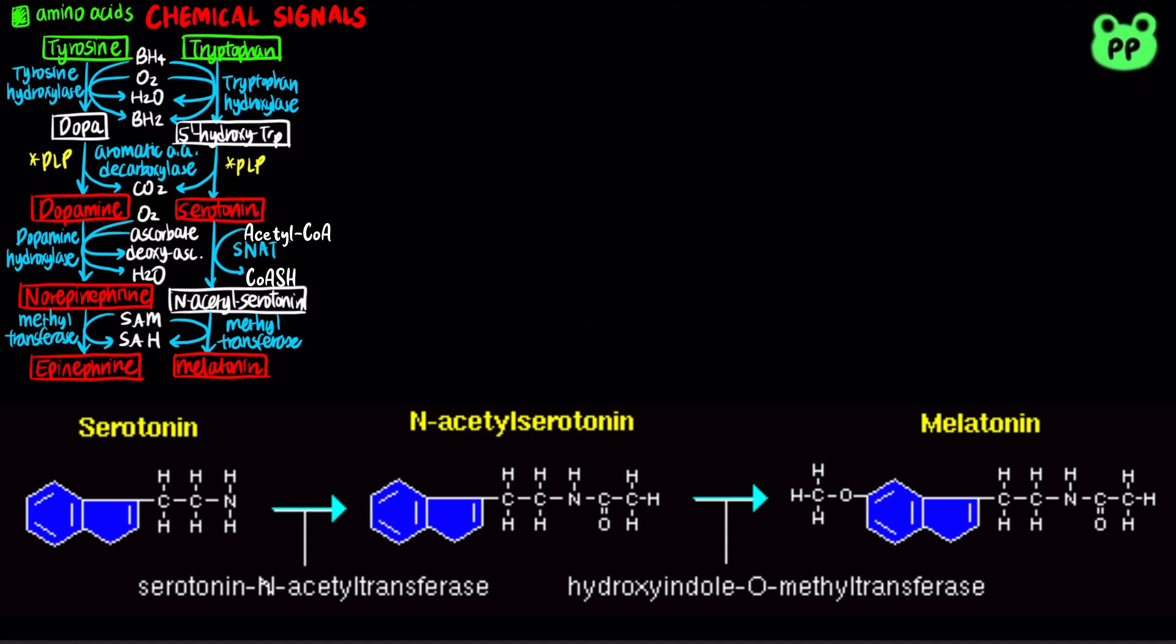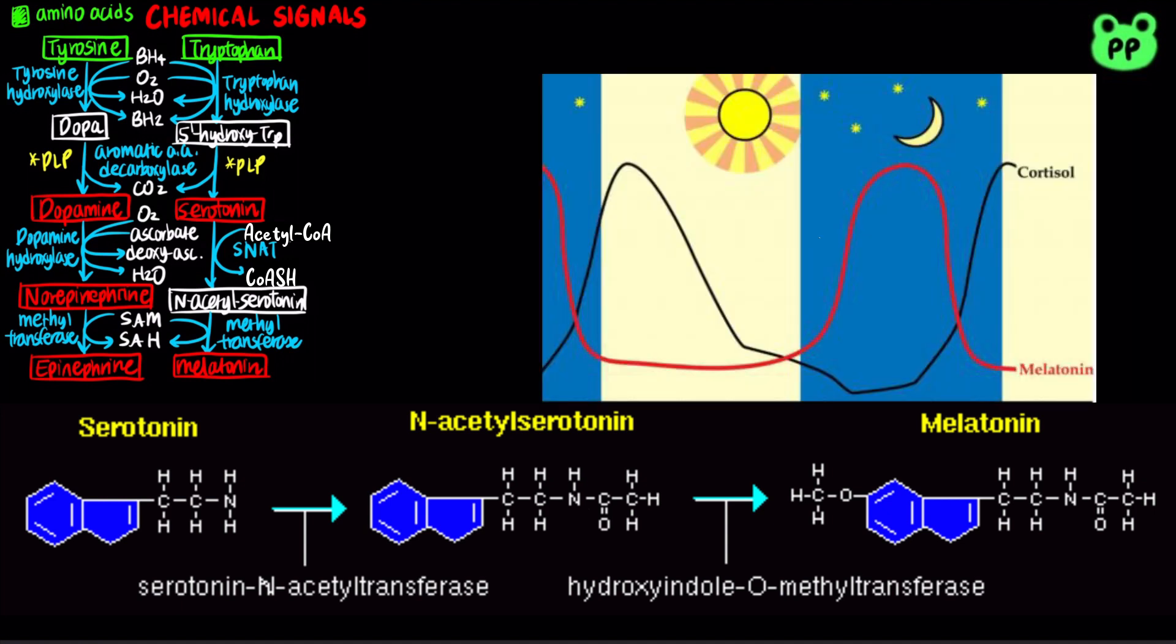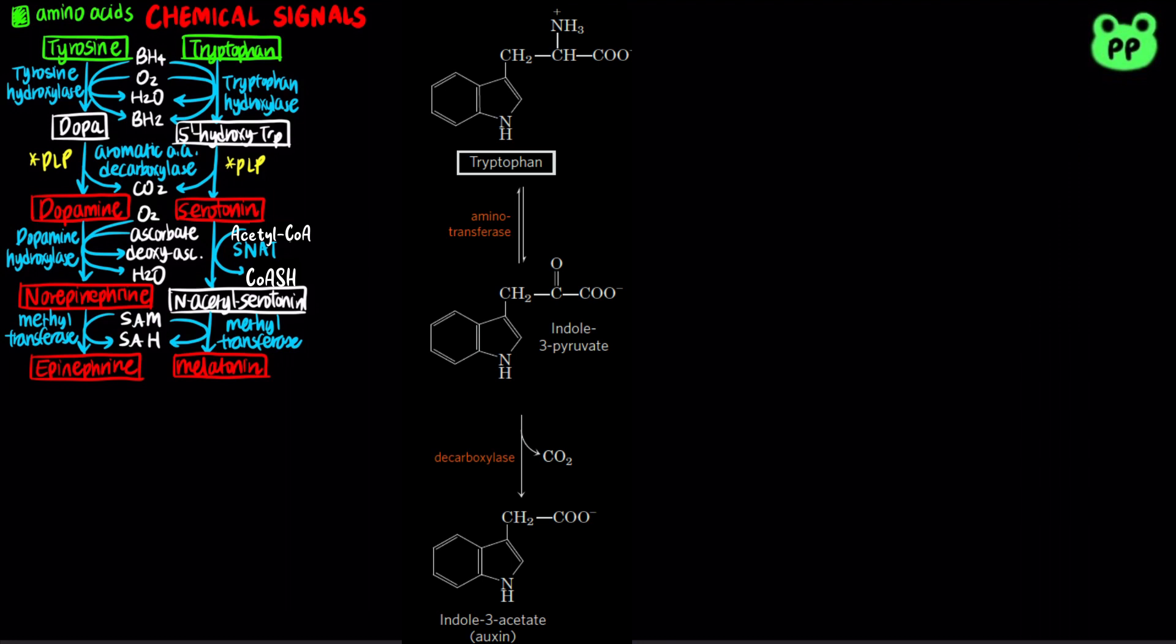Melatonin is a hormone produced by the pineal gland at night to regulate the sleep-wake cycle. Tryptophan also serves as a precursor to the plant hormone indole-3-acetate, or auxin, which promotes plant elongation.